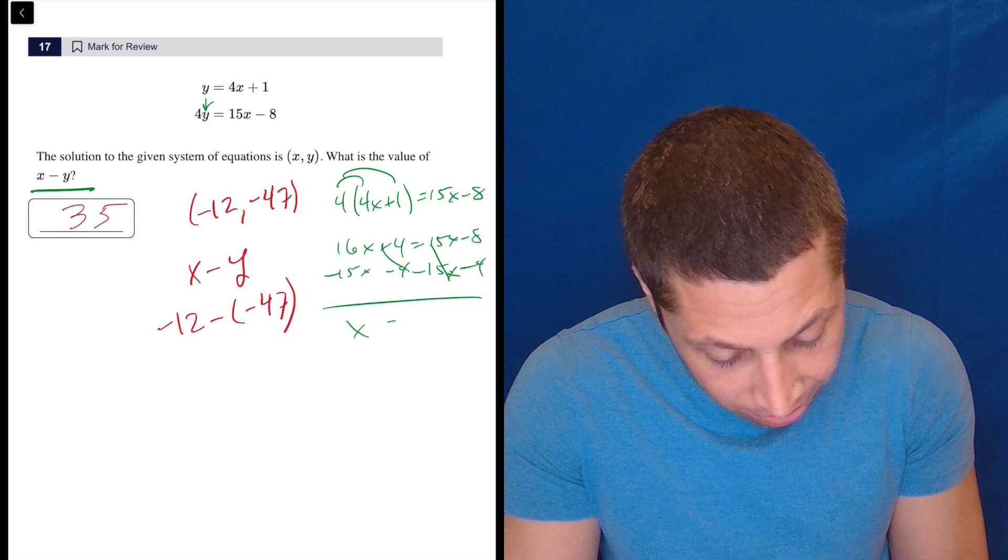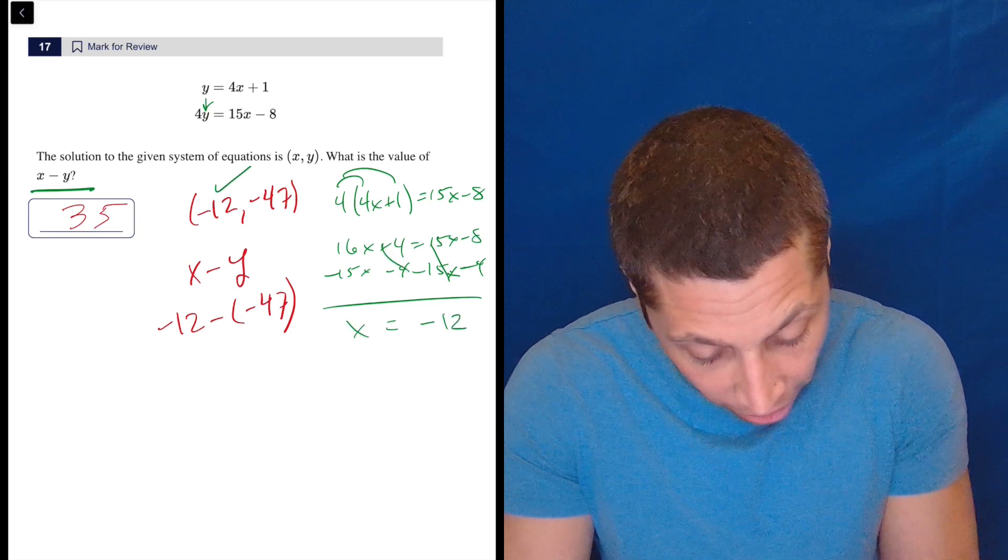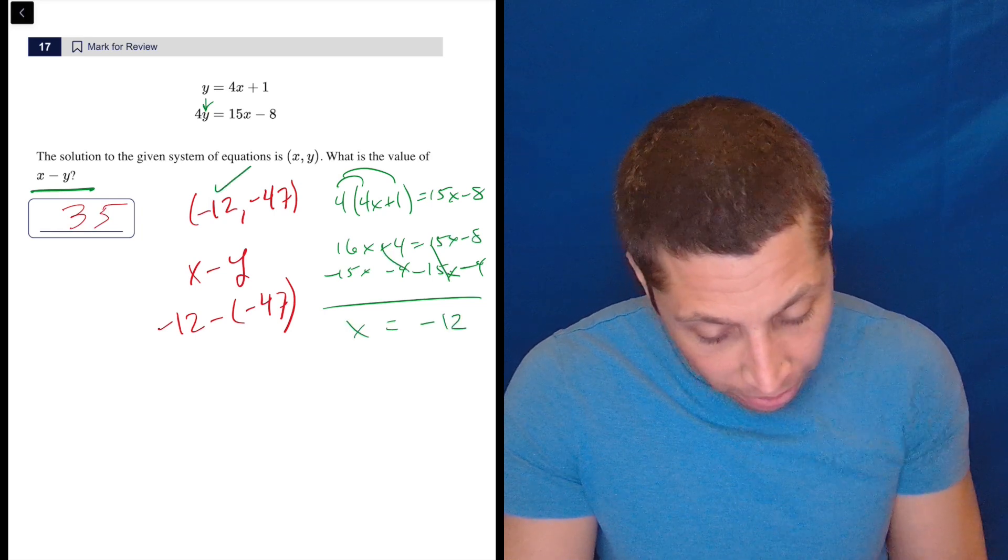Minus 15X, minus 15X, minus 4, minus 4. So boom, that's gone. That's gone. X is equal to negative 12, check. So that's what I got before.